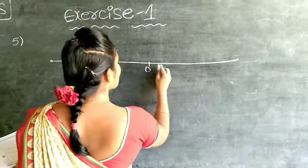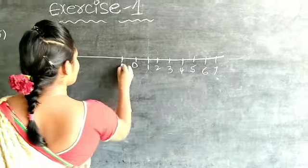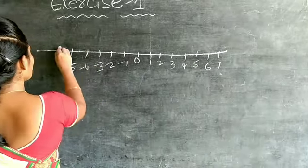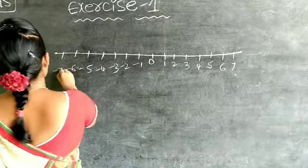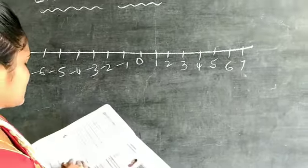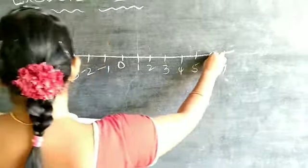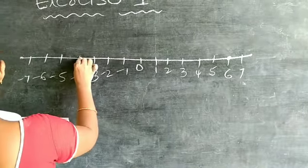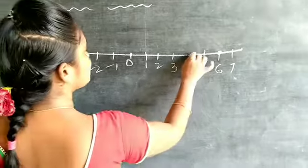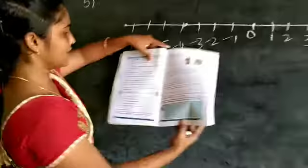On the number line: negative numbers on the left, positive numbers on the right — 1, 2, 3, 4, 5, 6, 7 and minus 1, minus 2, minus 3, minus 4, minus 5, minus 6, minus 7. So on this number line we represent 6, minus 4, 0 and 4. First, 6 is represented at 6; next, minus 4 is represented at minus 4; next, 0; next, 4. Now the missing integers on the number line, children.